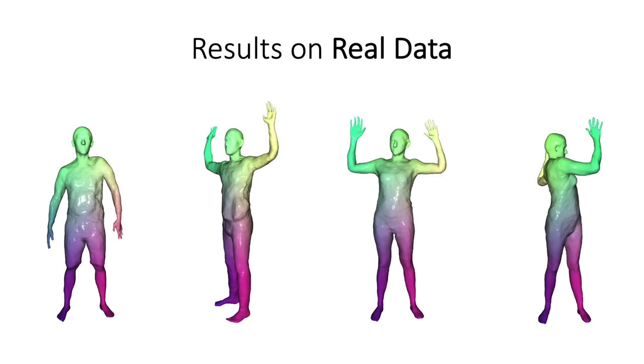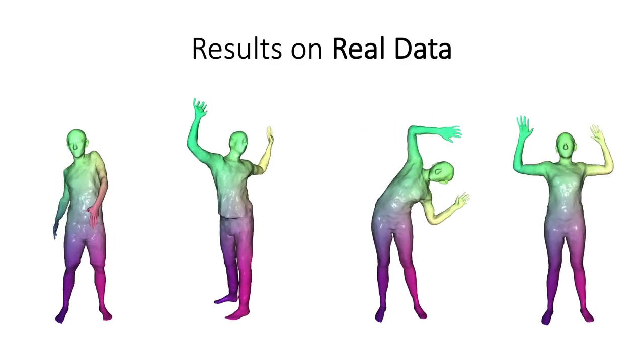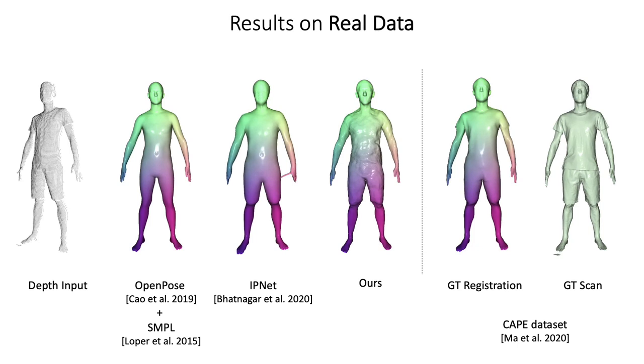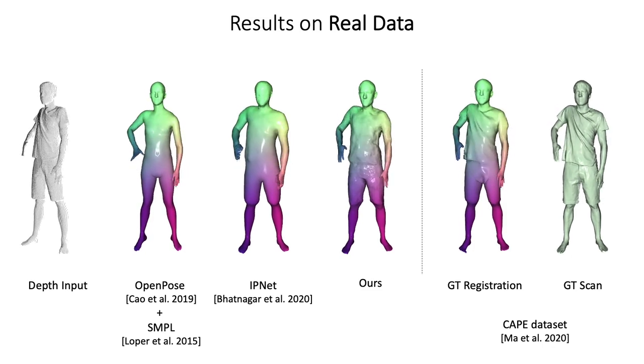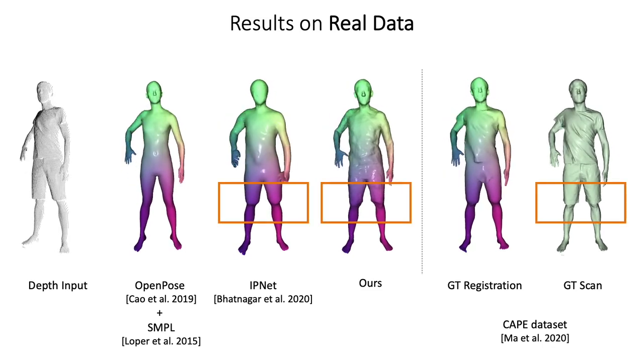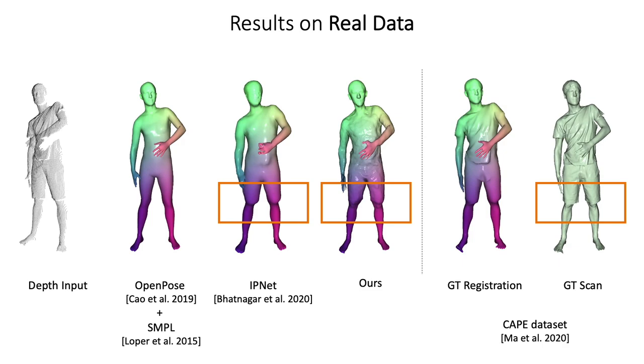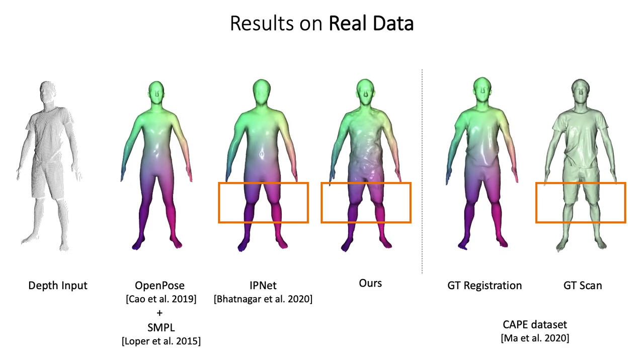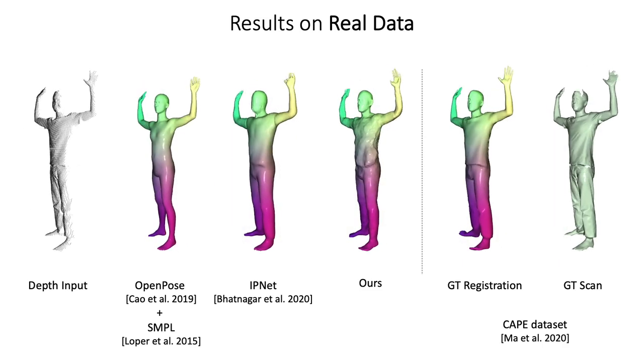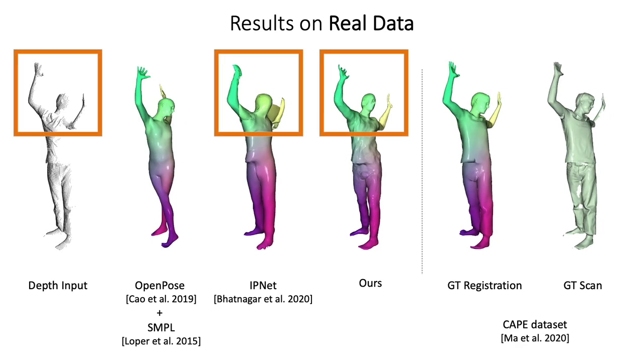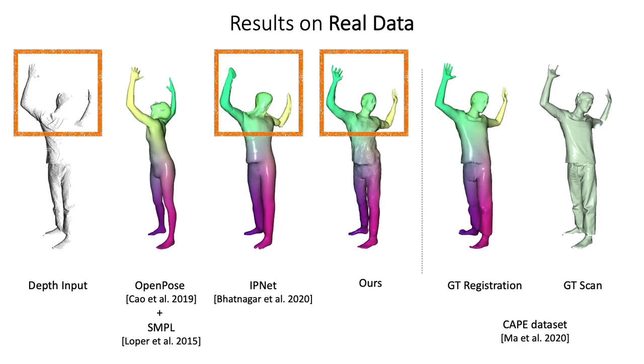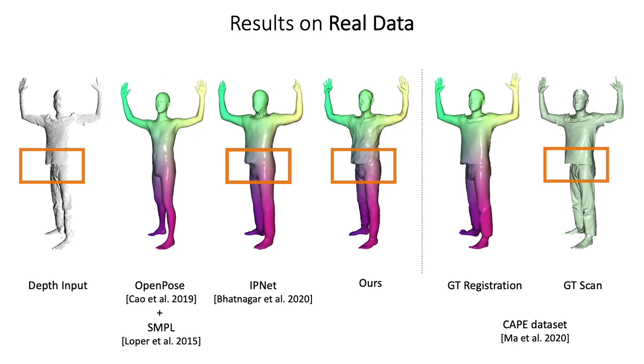We now show results in real data, on the task of fitting a model to a monocular depth sequence. We compare with SMPL, guided by OpenPose predictions of the joints, and with the recent IPNet, which combines learned implicit functions with traditional parametric models. Like IPNet, we can recover detail present in the input data, such as the shorts and the knee. Our NPMs allow for consistent tracking even under strong occlusions, while effectively capturing clothing details, as shown here.